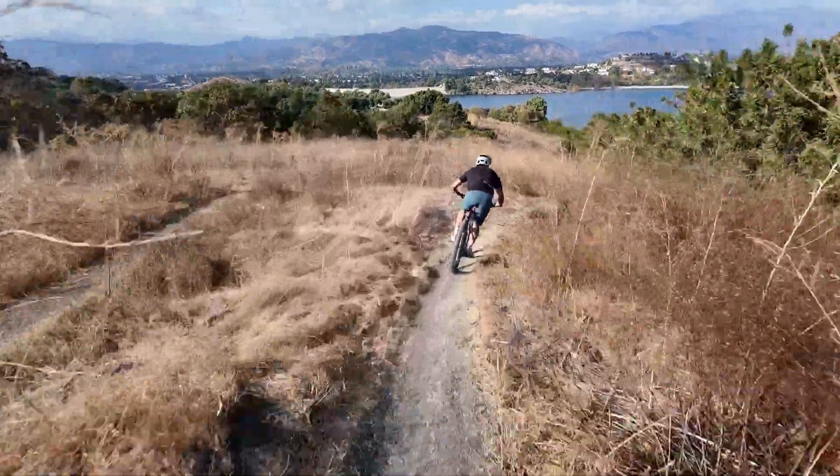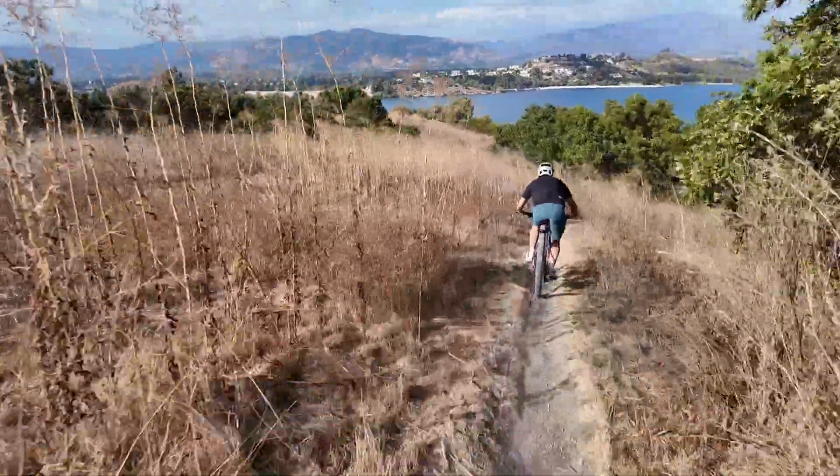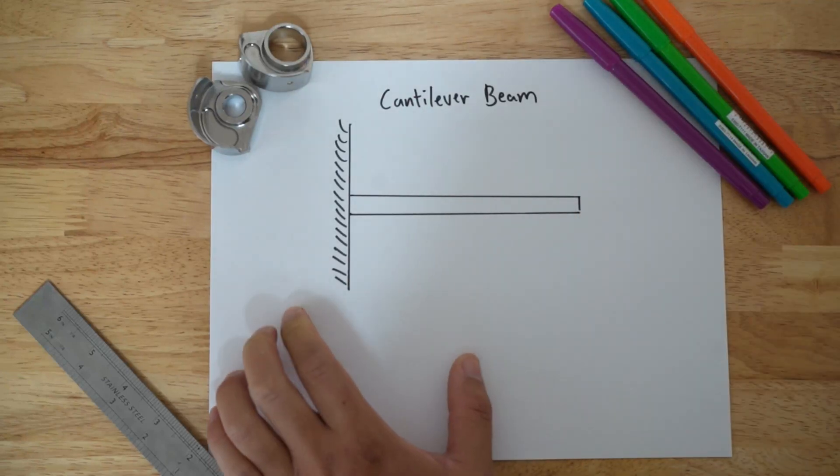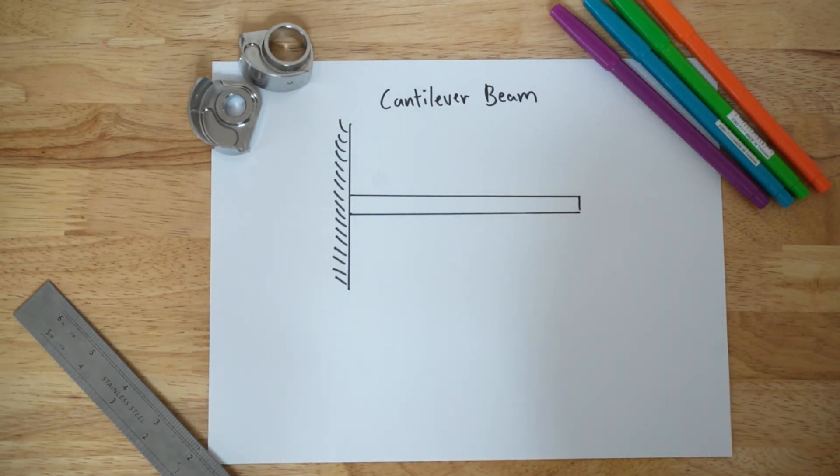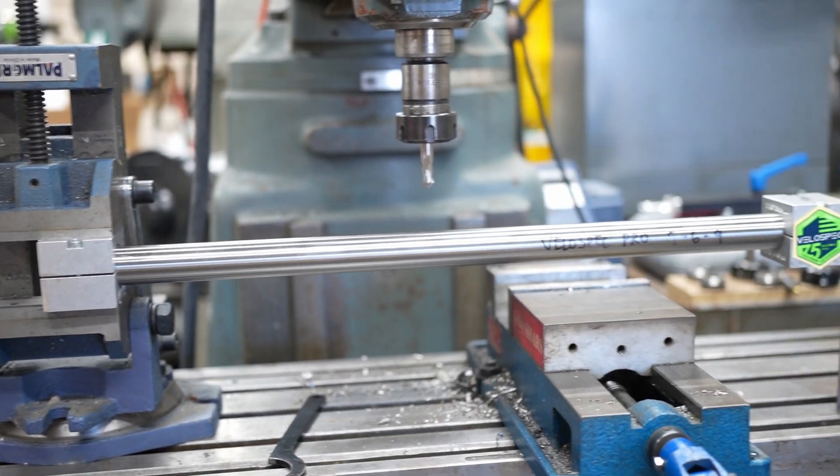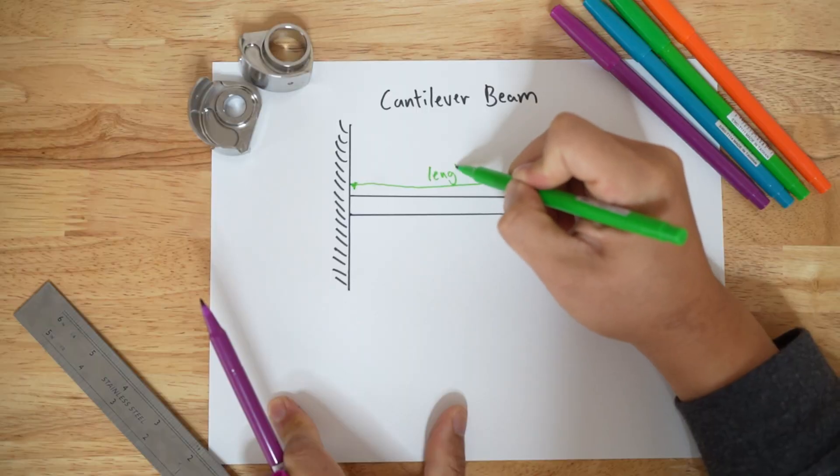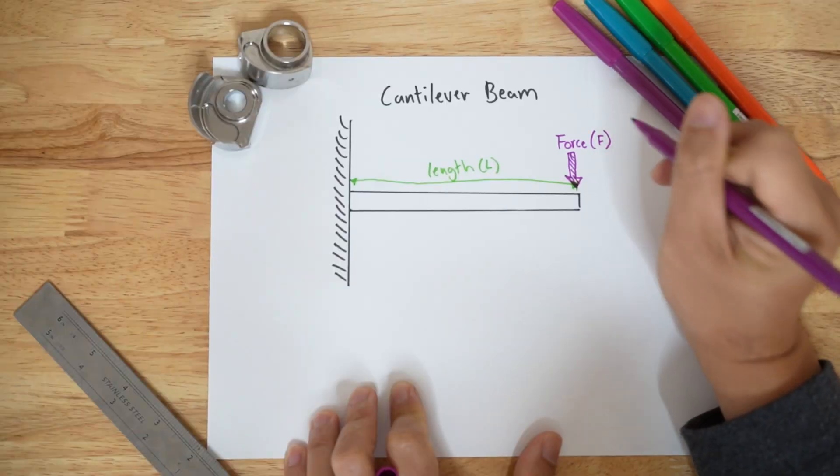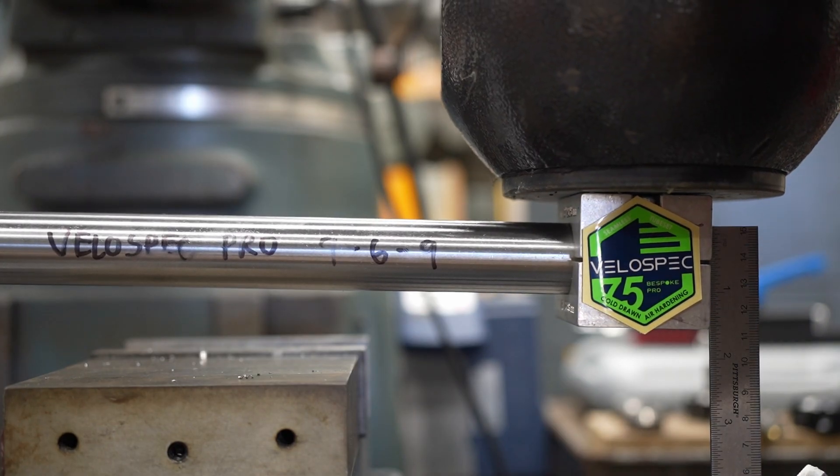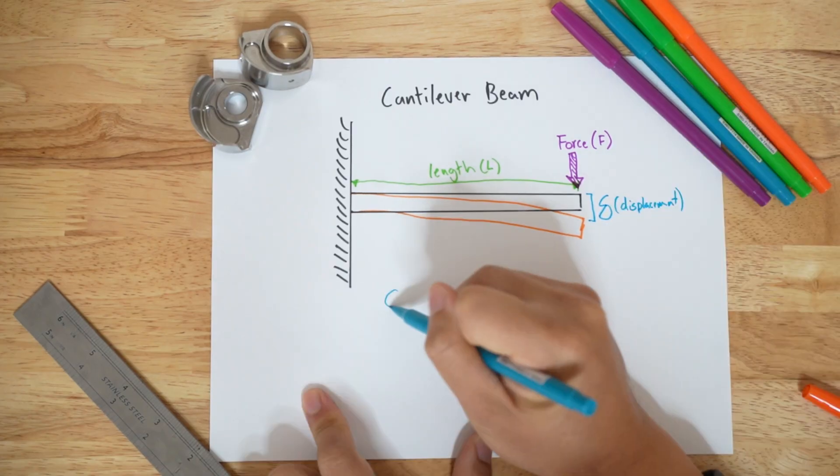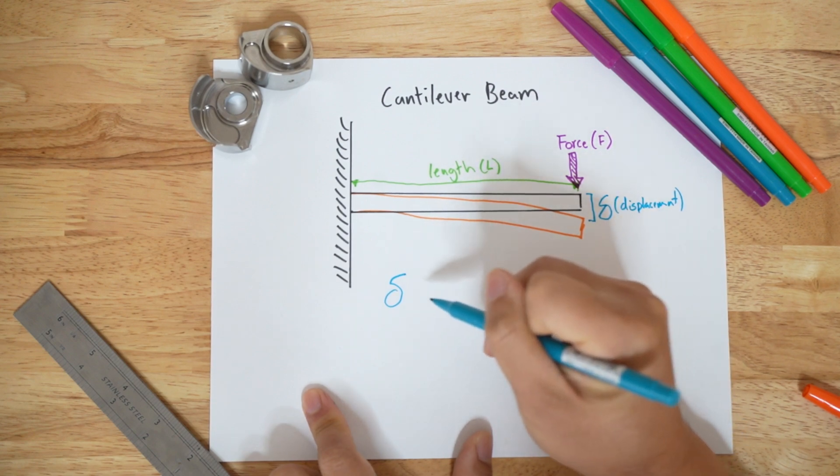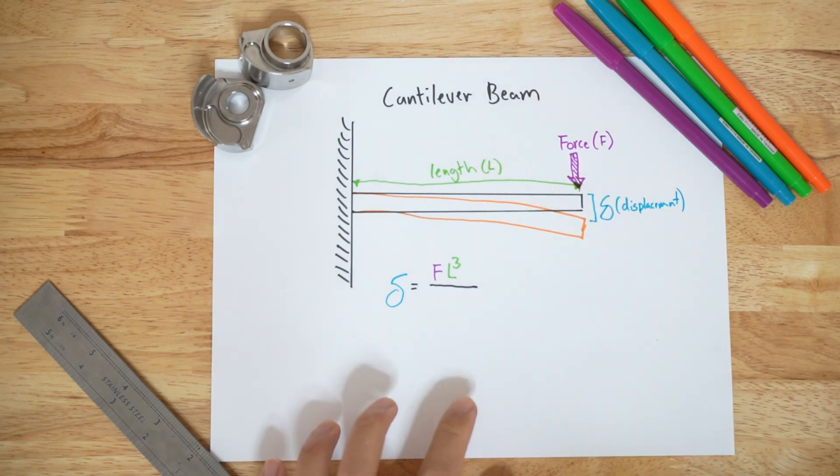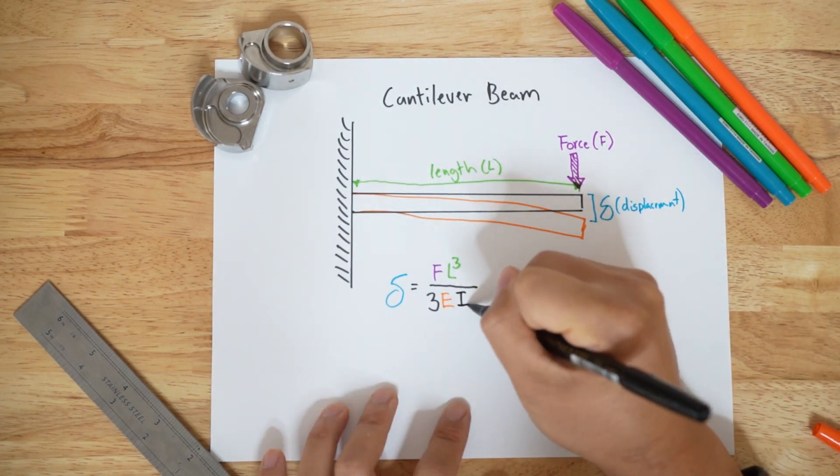How does butting contribute to ride quality? A bike while being ridden is subject to all sorts of different loads. Let's simplify this complex interaction into an easy to understand problem, the cantilevered beam. Imagine you have a tube of known length L clamped at its end. You apply a force F and the tube deflects a certain amount delta. The tube's deflection is given by the equation: displacement delta equals the force times length cubed divided by 3 times E times I.